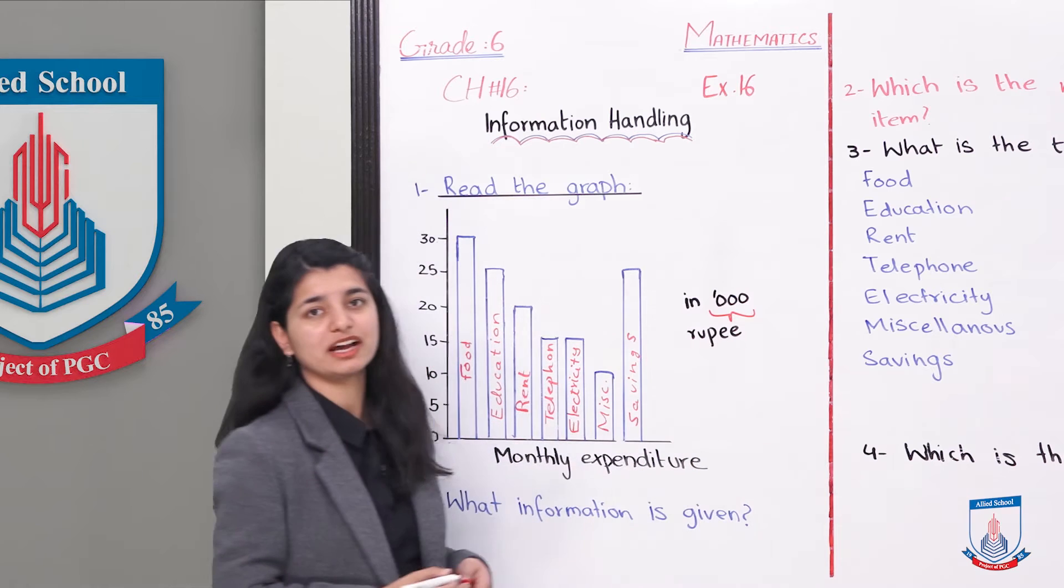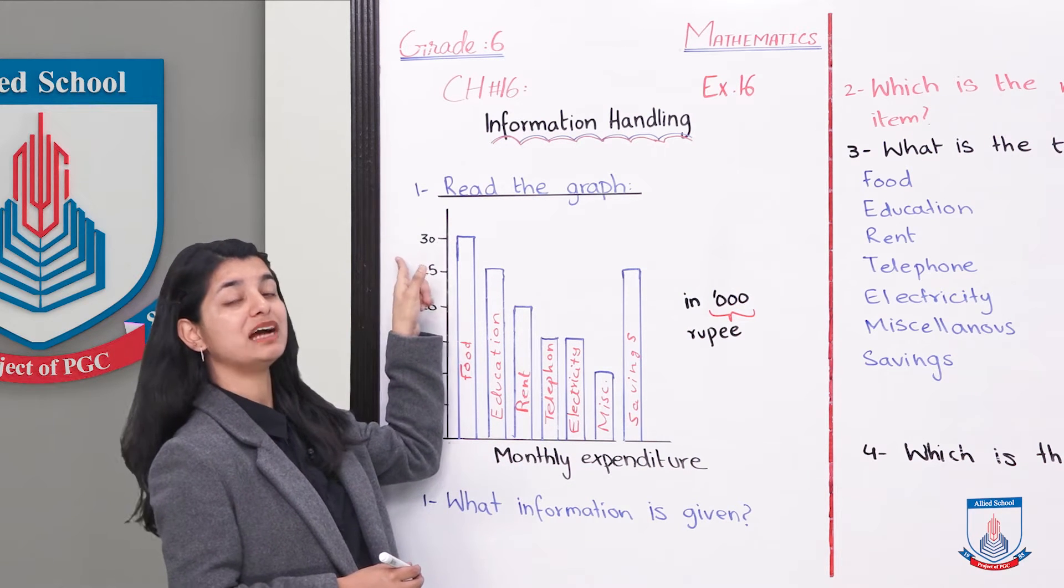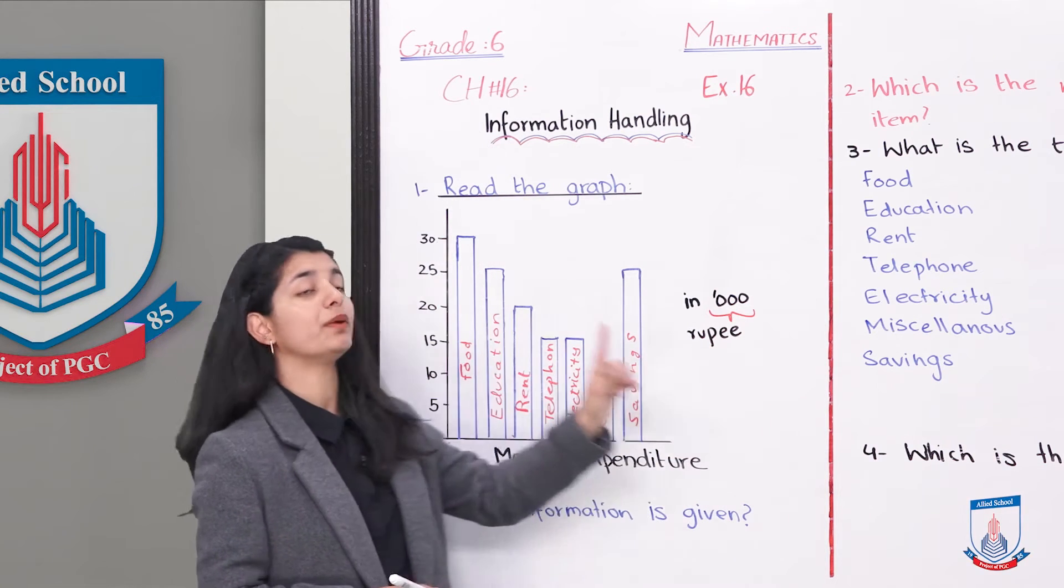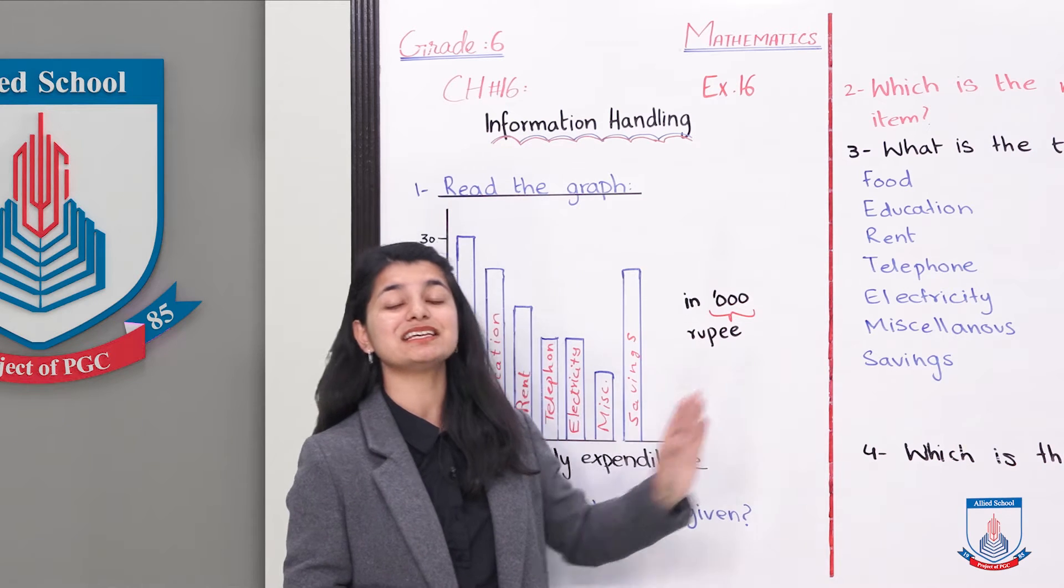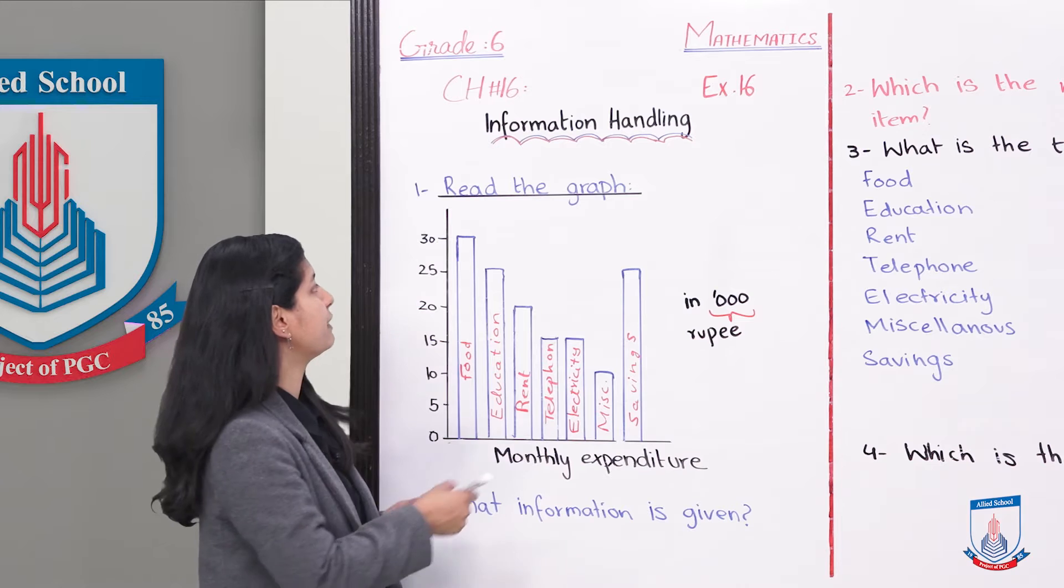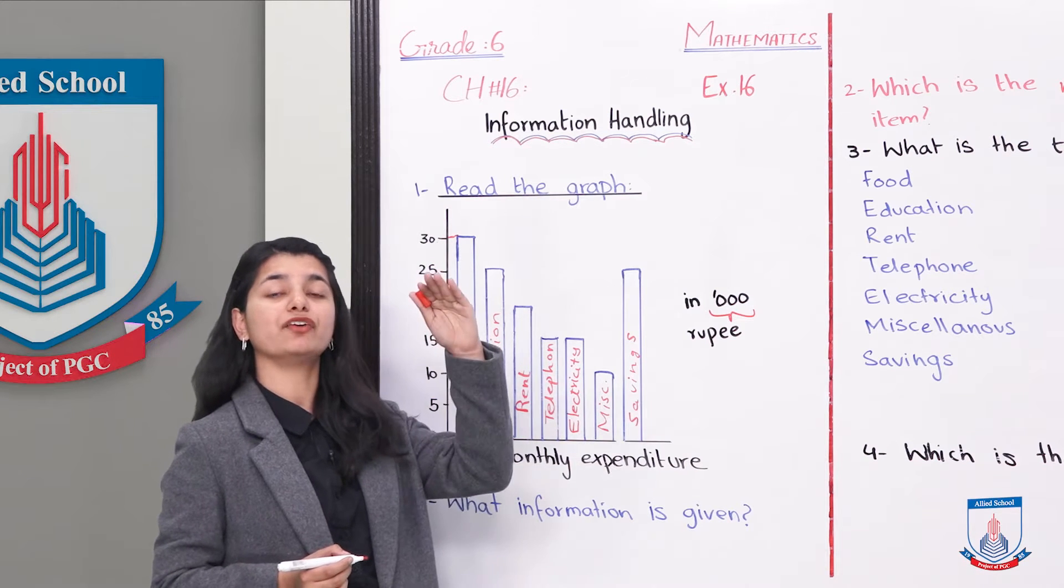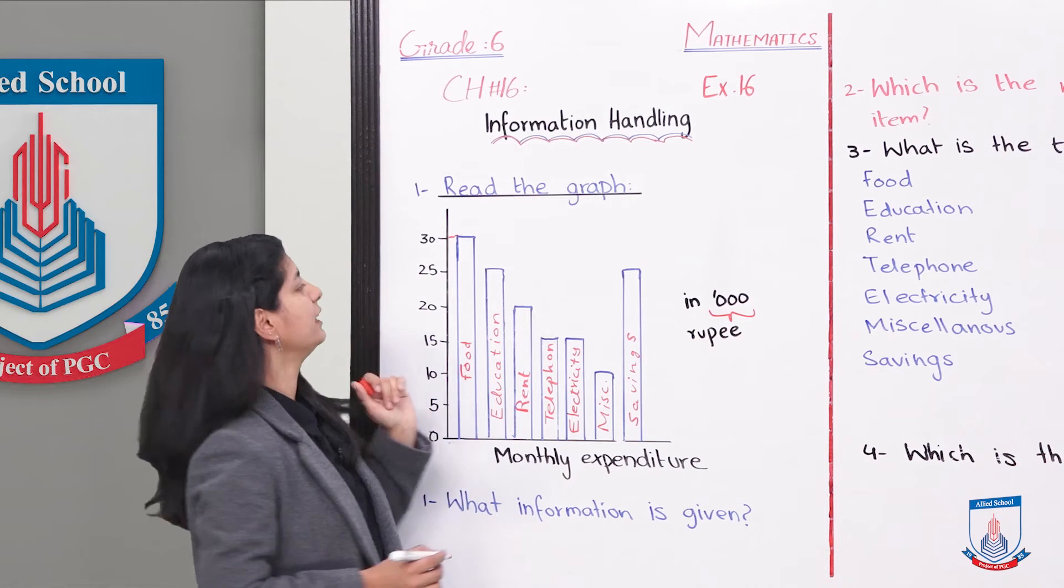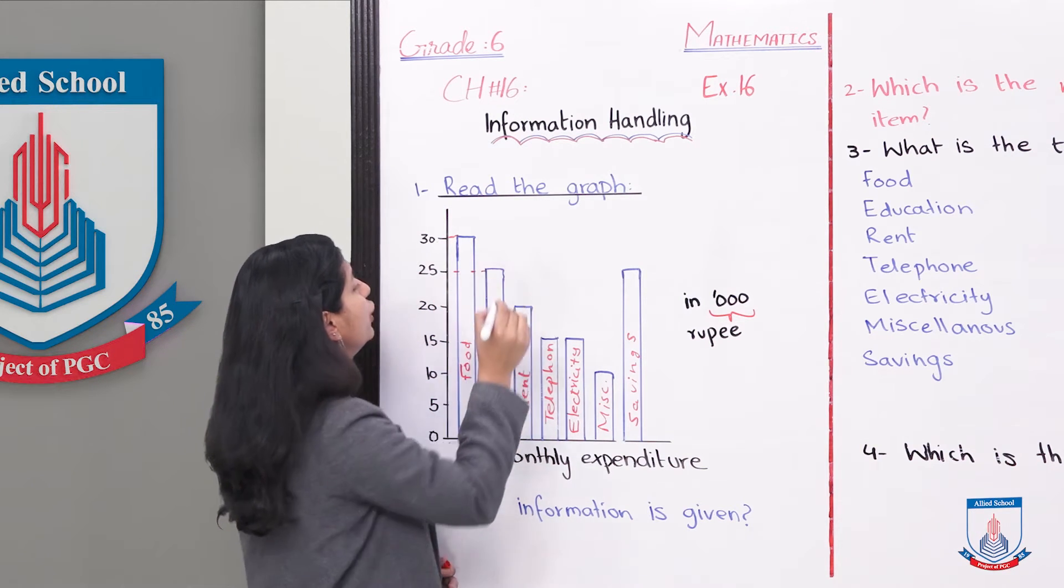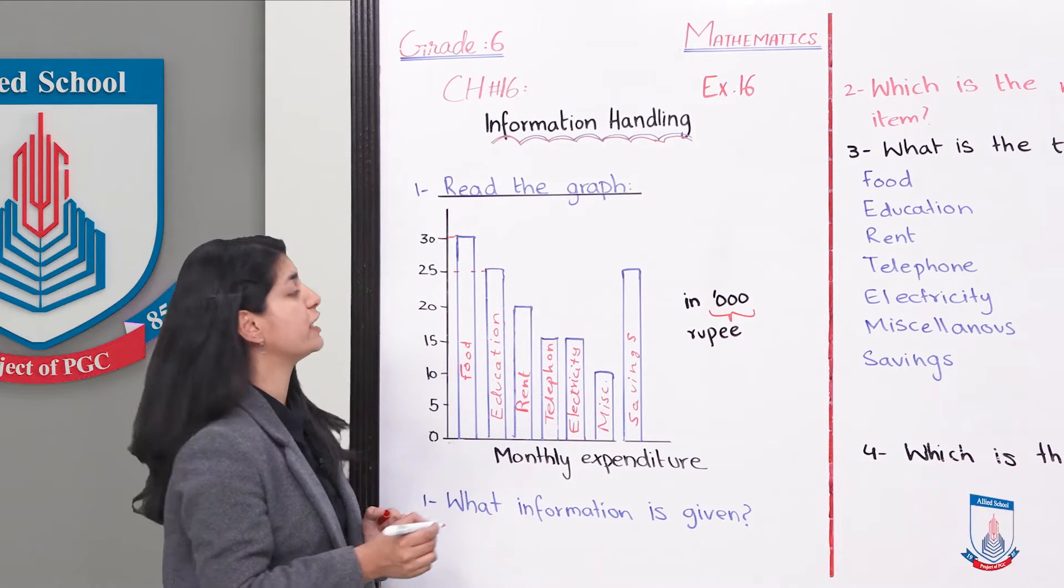You have monthly expenditures, and the entire amount is in 1000 rupees. The scale means that if you write 30, it means 30,000 rupees. If 25, then 25,000 rupees. The expenditure of food is 30,000 a month because the bar of our graph is going there. Similarly, the education expense is 25,000.